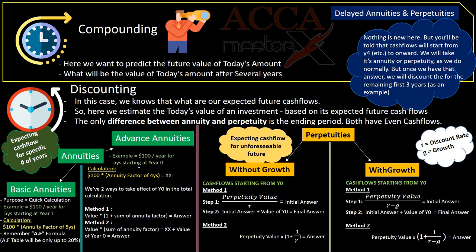We studied basic annuities and advanced annuities. First, let's make clear why we use annuities and perpetuities. In both cases we have even cash flows for the rest of their life, so we can speed up the process of calculation using annuities and perpetuities instead of taking each year's value and multiplying it with its relevant discounting factor.